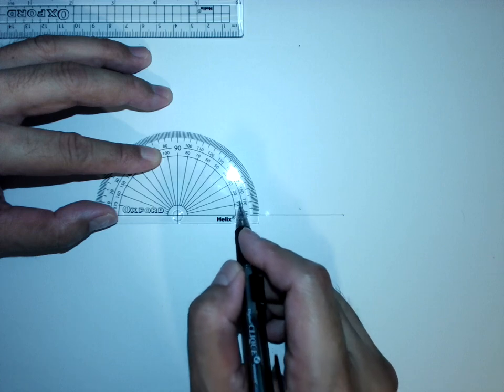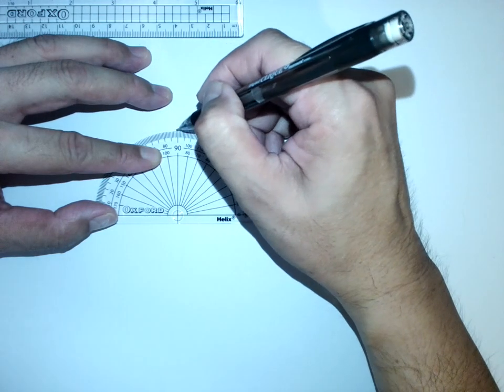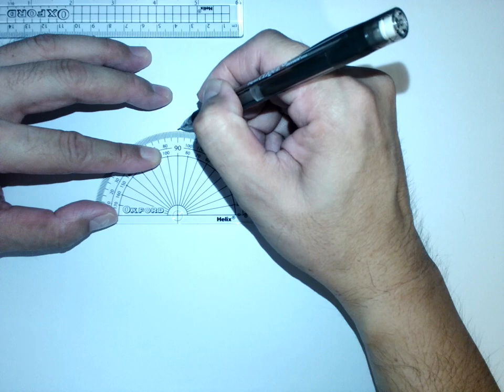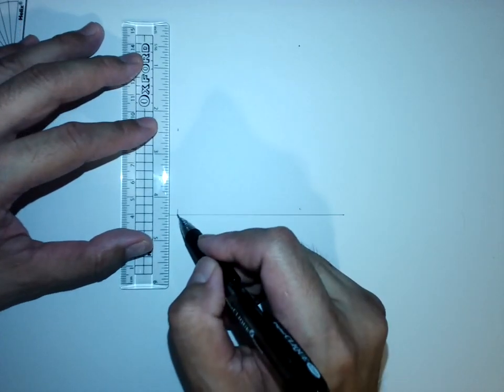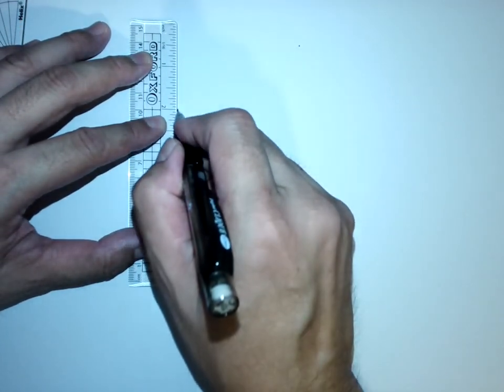From here, 0 all the way up to 90 degrees. Do a marking. So there are two points. Join these two points together.